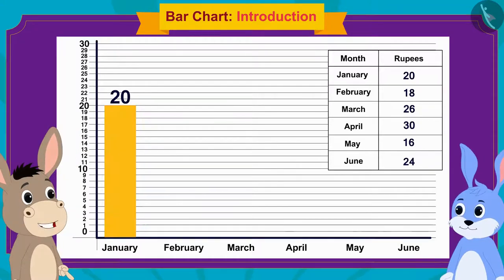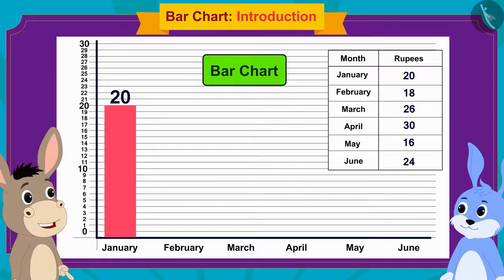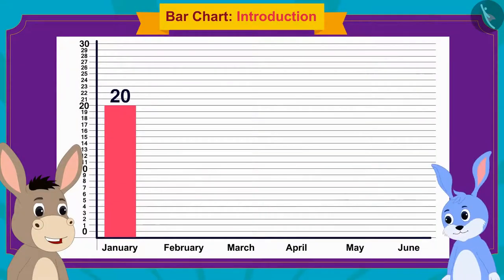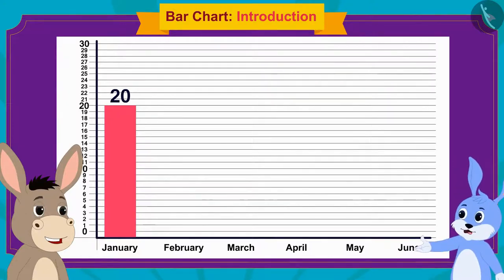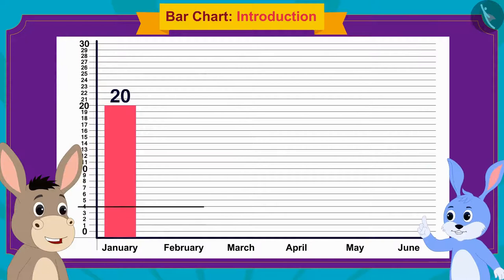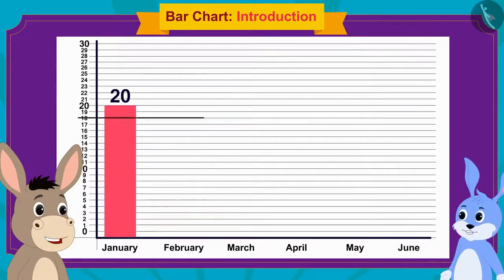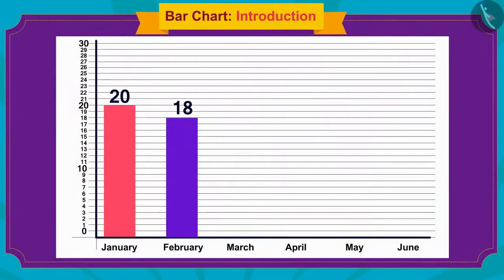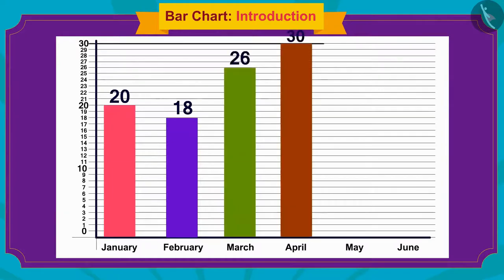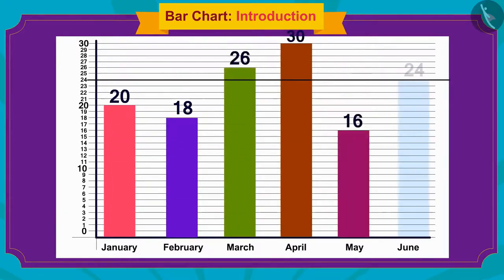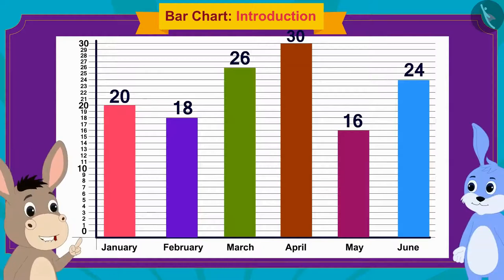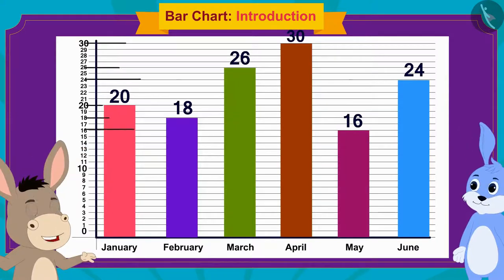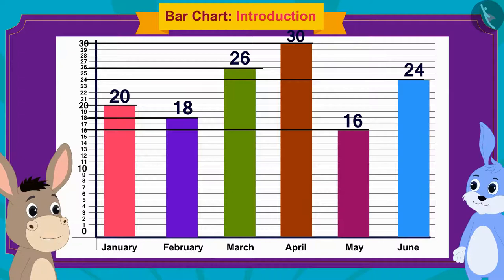Because these rectangles look like bars, the chart is called a bar chart. Bunny found this very interesting and made a rectangle with height reaching number 18 for the amount saved in February. Bunny and Bholla then made rectangles together for all the months, completing the bar chart.